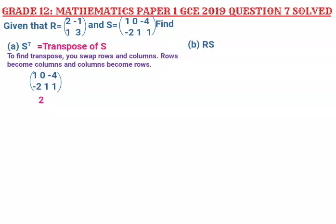The question was as follows: given that R is equal to 2, negative 1, 1, 3 and S is equal to 1, 0, negative 4, negative 2, 1, 1. Find (A) S transpose, (B) RS.